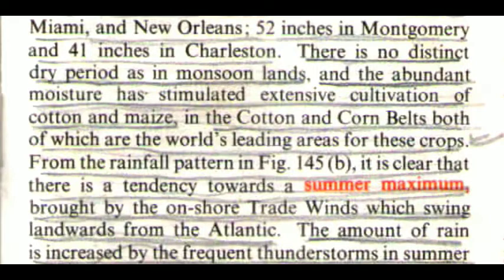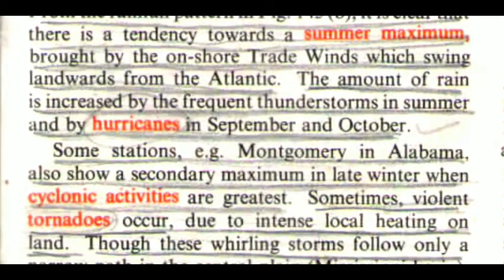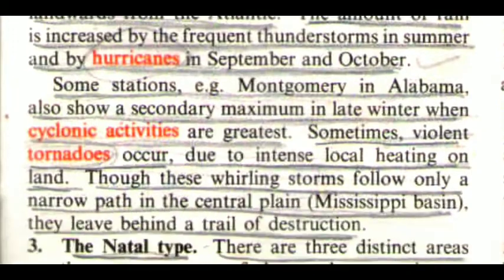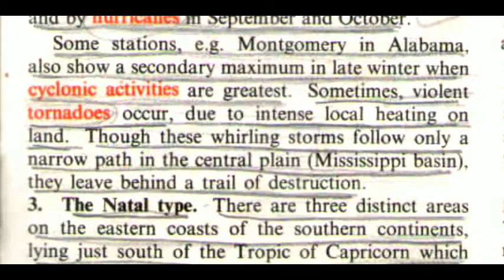There is no distinct dry period as in monsoon lands and the abundant moisture has stimulated extensive cultivation of cotton and maize in the cotton and corn belts, both of which are the world's leading areas for these crops. There is a tendency towards a summer maximum brought by the onshore trade winds which swing landwards from the Atlantic. The amount of rain is increased by the frequent thunderstorms in summer and by hurricanes in September and October. Some stations, e.g. Montgomery in Alabama, also show a secondary maximum in late winter when cyclonic activities are greatest. Sometimes violent tornadoes occur due to intense local heating on land, leaving behind a trail of destruction in the central plain Mississippi basin.